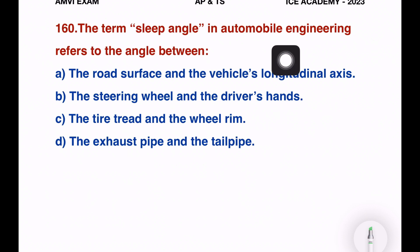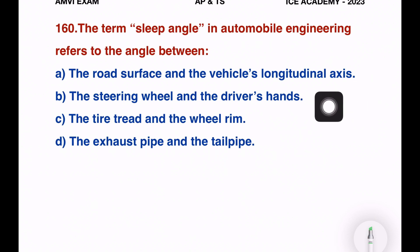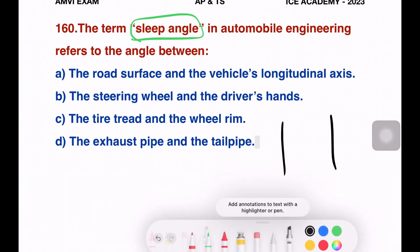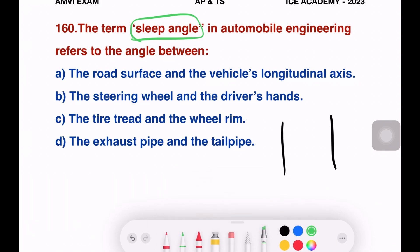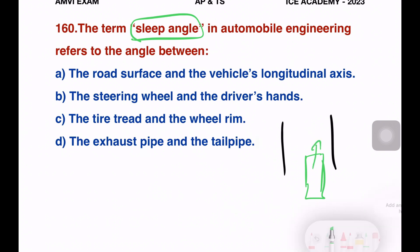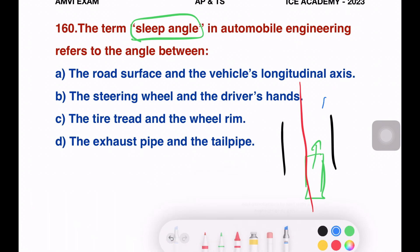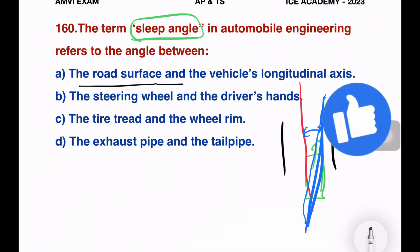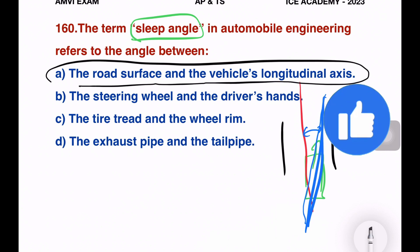Next question. The term 'slip angle' in an automotive engine refers to the angle between: the road surface and the vehicle longitudinal axis; the steering wheel and the driver's hand; the tire tread and the wheel rim; or the exhaust pipe and the tail pipe. If you draw a diagram — this is the road, we have a vehicle here — the slip angle is the angle between the road surface and the vehicle. The road surface axis is the slip angle. So option A is the right answer.